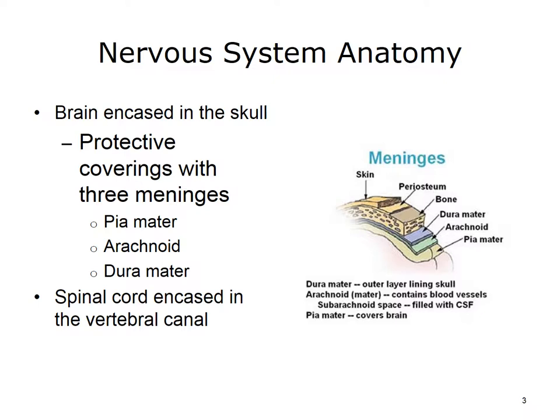The brain has three protective coverings. These layers, or meninges, are the pia mater, the arachnoid, and the dura mater. The pia mater, the innermost layer, is a thin and delicate inside covering. The arachnoid is the middle layer, with subarachnoid space which is filled with cerebrospinal fluid. The dura mater, or outer layer, lines the inner surface of the cranium, or skull.